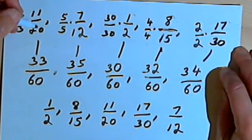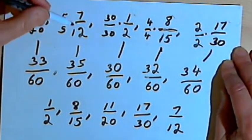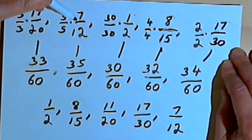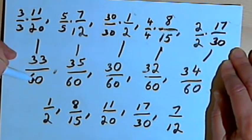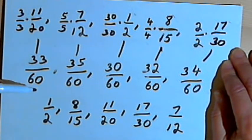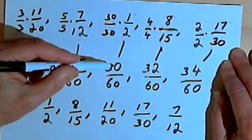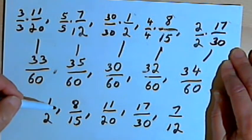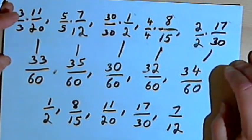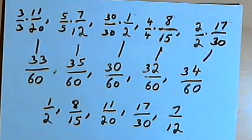So all we have to do here is find a common denominator when your denominators are different. Convert all of your fractions into fractions with that common denominator. And then compare the numerators. And that will tell you how to arrange the fractions. Okay? So that's it. Take care and I'll see you next time.